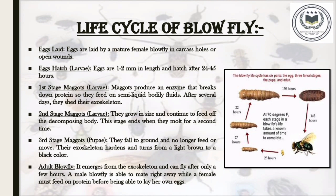Though we use the term blowfly, there are many different species with different growth charts and development timelines. Though adults are easy to tell apart, the maggots can look quite similar. Part of a forensic entomologist's job is identifying which species the maggot belongs to and knowing how temperature and environment affects that growth. On average, the life cycle of a blowfly goes through six stages. The first is eggs laid: eggs are laid by a mature female blowfly in a carcass, hole, or open wounds such as ears, nose, eyes, mouth and anus within minutes or hours of death.